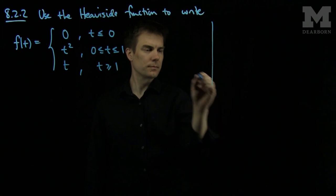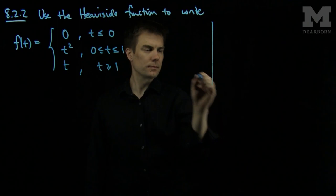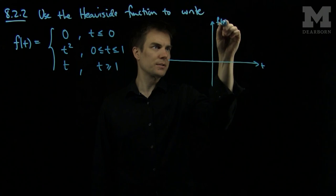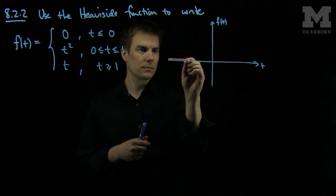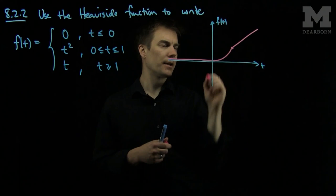So what this function will look like is here is my t-axis, here is my f of t-axis. And I will have the function that looks like 0, then a parabola, then a line. That's our function f of t.